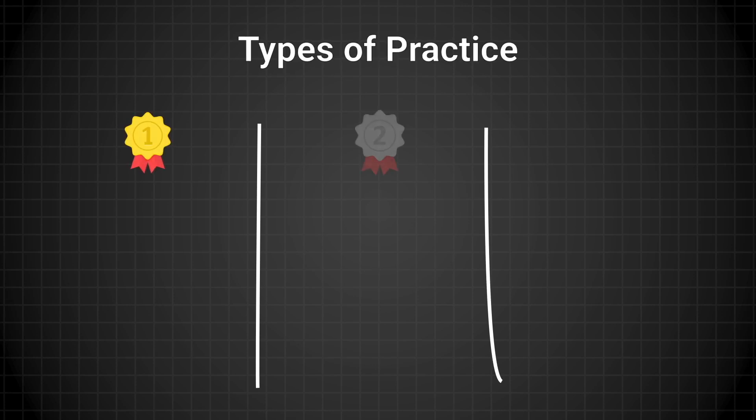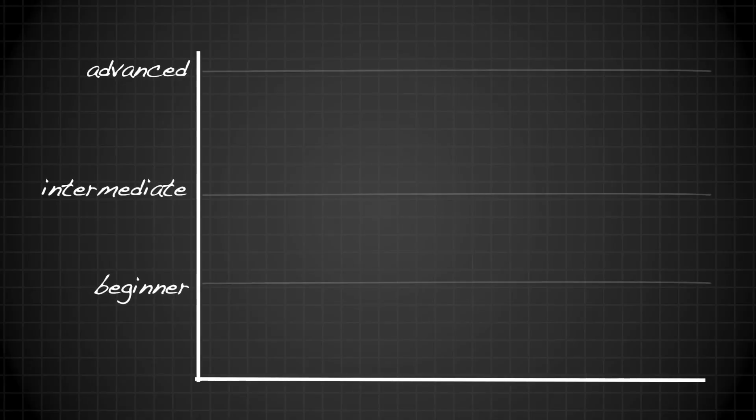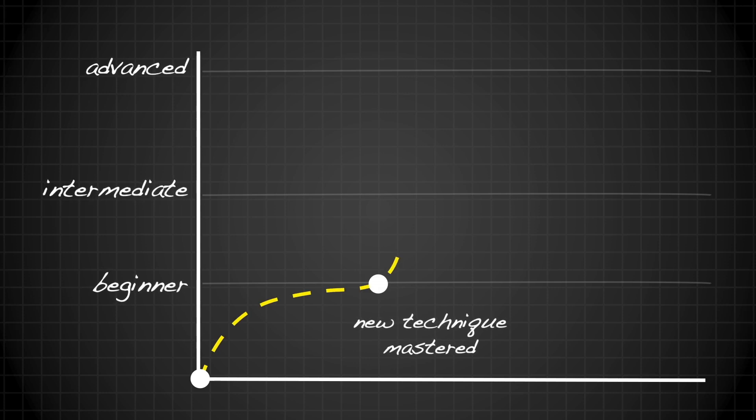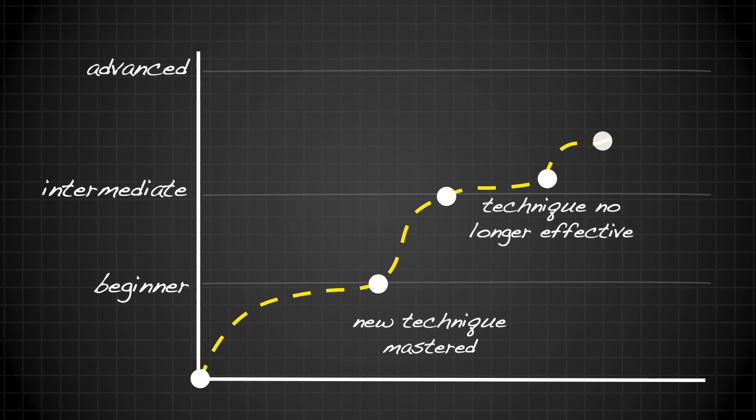In order to understand deliberate practice, it's helpful to define it and contrast it with other forms of practice. In deliberate practice, students are given explicit instructions about what techniques to use to develop their skill. The techniques that are effective for beginners may cease to be effective for intermediate and advanced students. So techniques have to be tailored to the current levels and interests of the student.